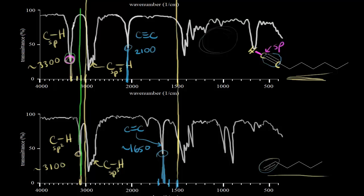Comparing the alkyne and alkene: a triple bond vibrates faster than a double bond, so the triple bond stretch appears at a higher wave number (around 2,100) while the carbon-carbon double bond stretch appears at a lower wave number (around 1,650). These are important distinctions to keep in mind.